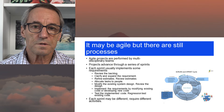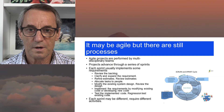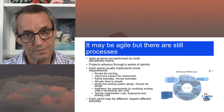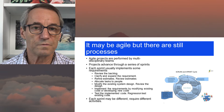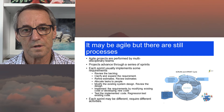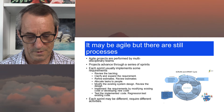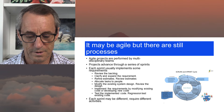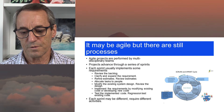You might modify the existing system design as a first step, and if you do, you then have to review that design. You might implement the requirements by modifying the existing code, and then you have to do some sort of verification and validation to determine that you've actually implemented what you're supposed to and that it works. Usually you test the implemented code and regression test it. Each sprint may be different, but there will be a general similarity across them all.